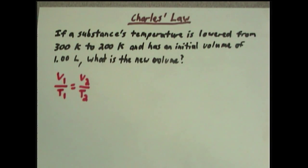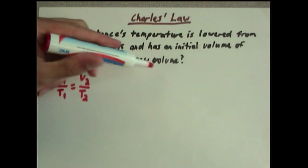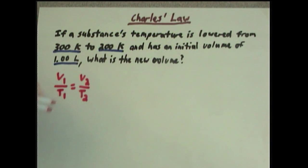And we can see in the problem that we have two temperatures, 300 kelvins and 200 kelvins, and a volume, 1 liter. So if we were to rearrange this problem to solve for V2, which is what the problem is looking for, we will say that V2 is equal to V1 times T2 divided by T1. And now it's just a plug-and-chug. We put our numbers in and calculate our answer.